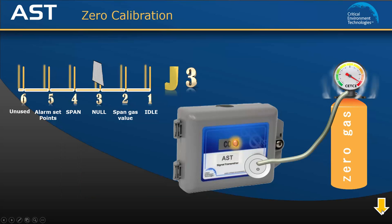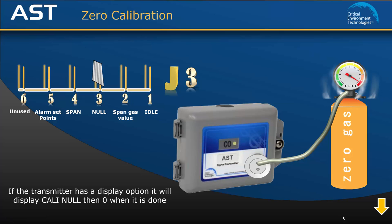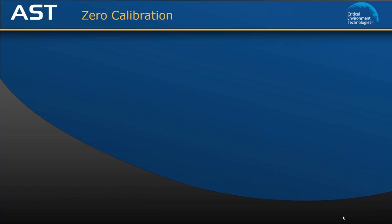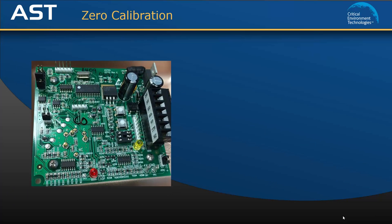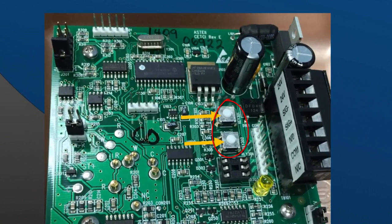Once the countdown is finished and the AST has adjusted the null value, the LED will change back to solid green. If your AST has the optional display, it will show Cali null. Move the jumper back to the idle position and then remove the zero air cylinder. If after flowing zero air the circuit does not settle within the 20% tolerance value, you can continue the null procedure by performing an unlock function. To do this, push both the up and down buttons together. The zero calibration procedure will then continue.